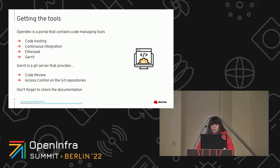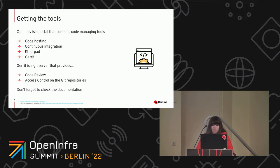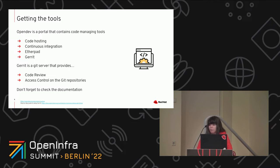Once you're in the IRC, you can go ahead and get the code. We use OpenDev and Gerrit. OpenDev is a portal that contains several things: it has code hosting, it has Zuul which is the continuous integration, and it has the Gerrit web interface. Gerrit is a Git server that provides code review in a different way than GitHub because it's not based on merge and pull requests. Please don't forget to check the documentation, where you'll find how to create your Gerrit account and set up your Ubuntu One account, which you'll need to make your contributions.